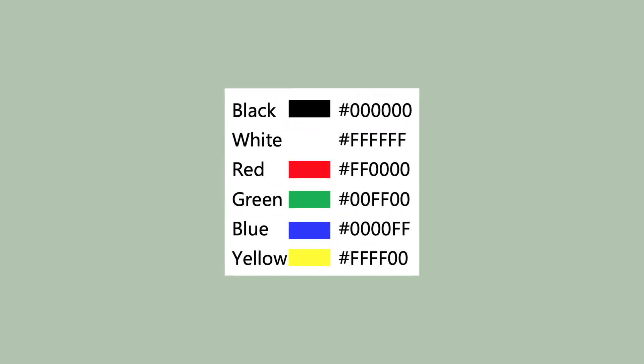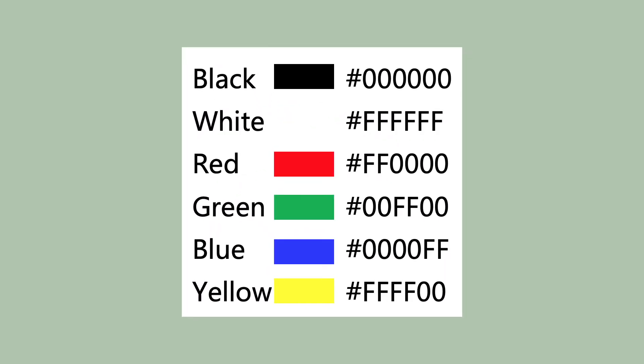Another way color values are used is with hexadecimal colors. These are six-digit codes that represent the amount of red, green, and blue in a color. When using these hexadecimal codes, you always precede each code with a hashtag when using them as a value in CSS. The first two digits represent red, the next two green, and the last two blue. FF is the highest value, and 00 is the lowest.